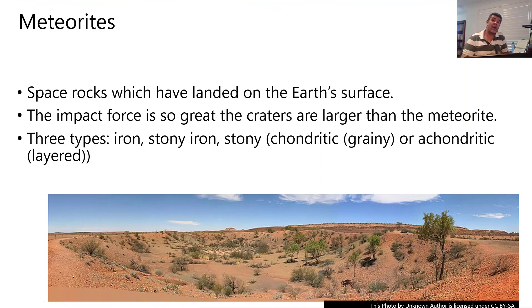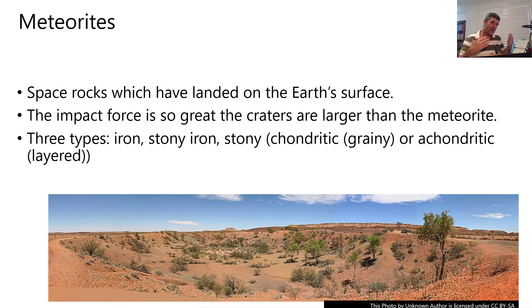A good place to start is: what are meteorites? There are a couple of different terms we use to describe rocks in space. Meteoroids are rocks moving around in space. Meteors, or shooting stars, are ones that start to come through our atmosphere — the friction between atmospheric particles and the space rock gives off heat and potentially light. When they hit the ground without completely breaking up, they are regarded as meteorites — space rock that has actually landed on the Earth's surface.